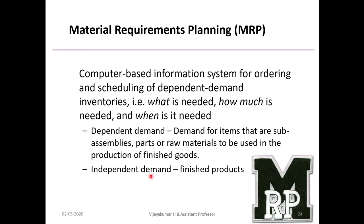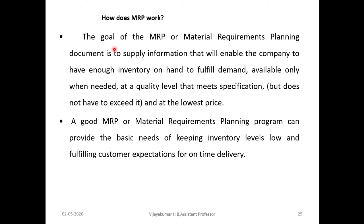Independent demand can be easily forecasted. For example, the sales of a car in a particular week or month can be easily forecasted, and spare parts also come under independent demands. Dependent demand, however, cannot be easily forecasted — raw materials, sub-assemblies, and components cannot be easily forecasted; those are examples of dependent demands.